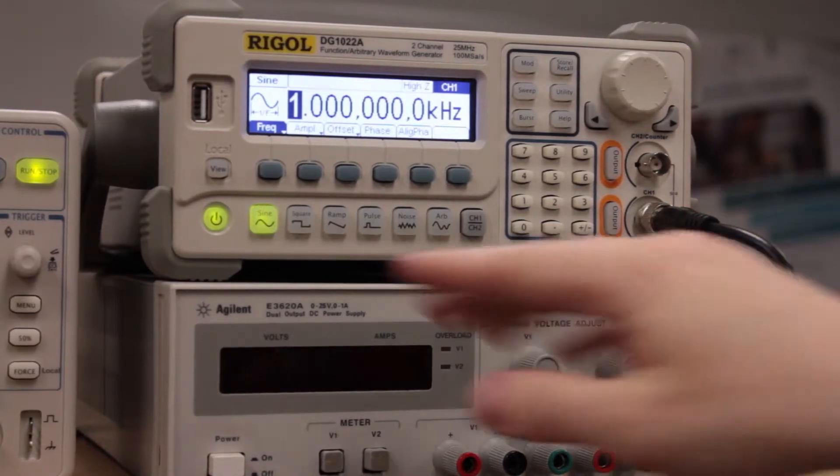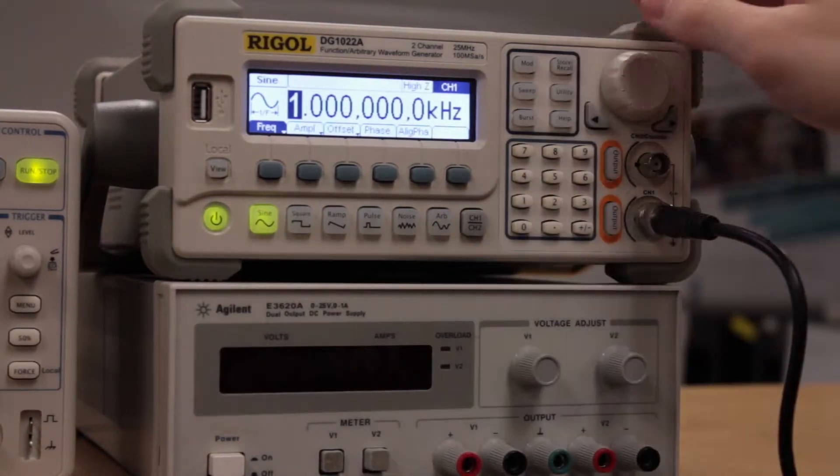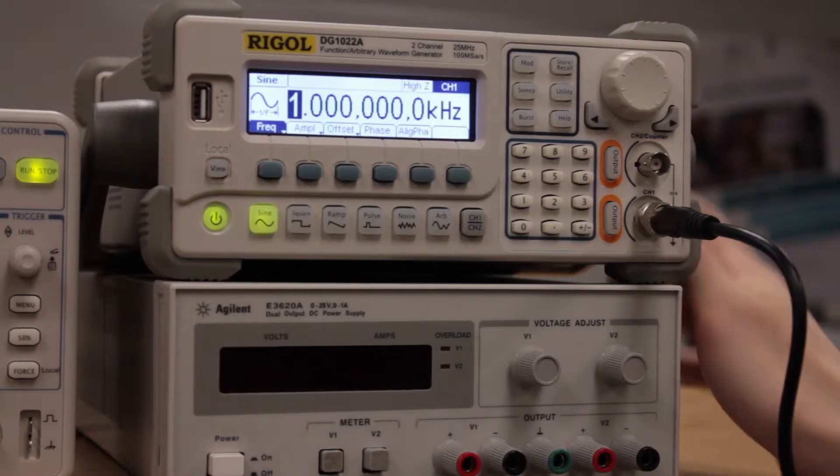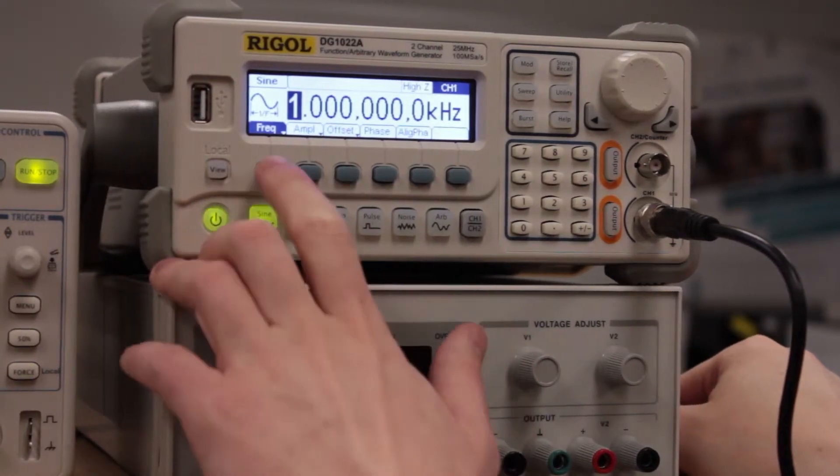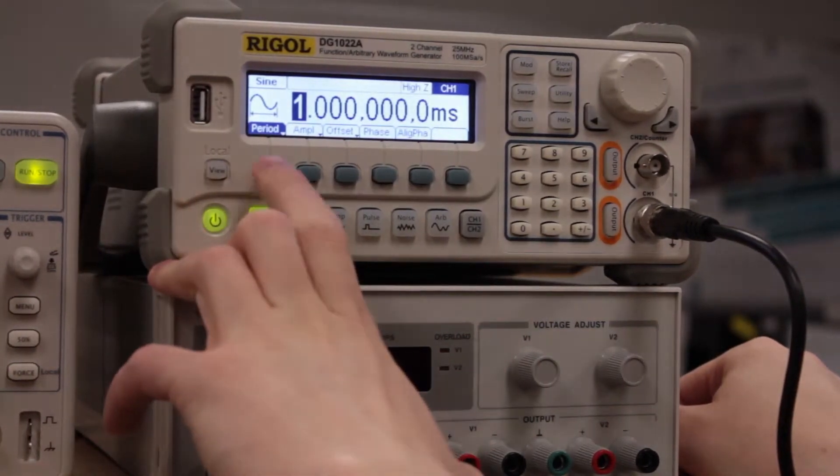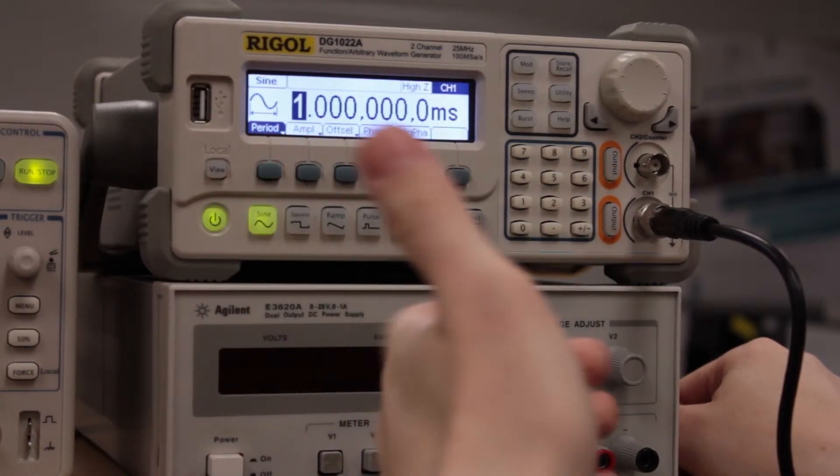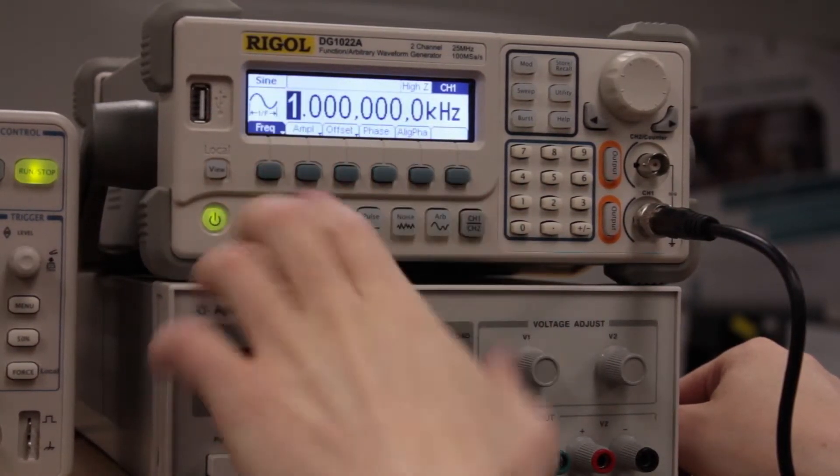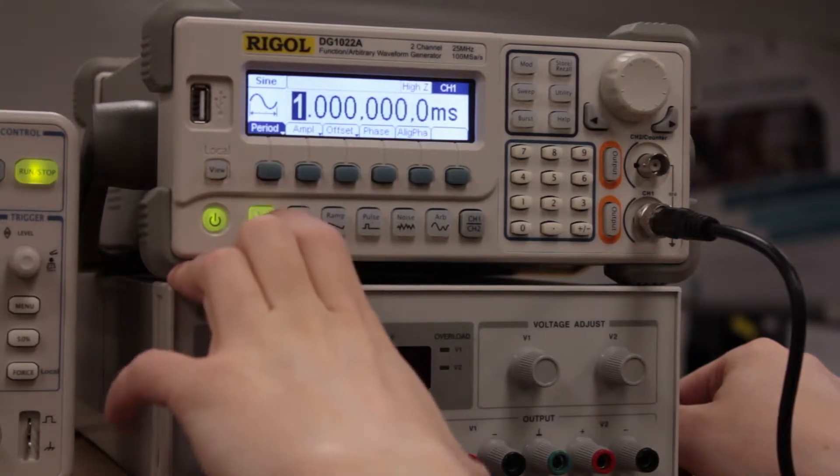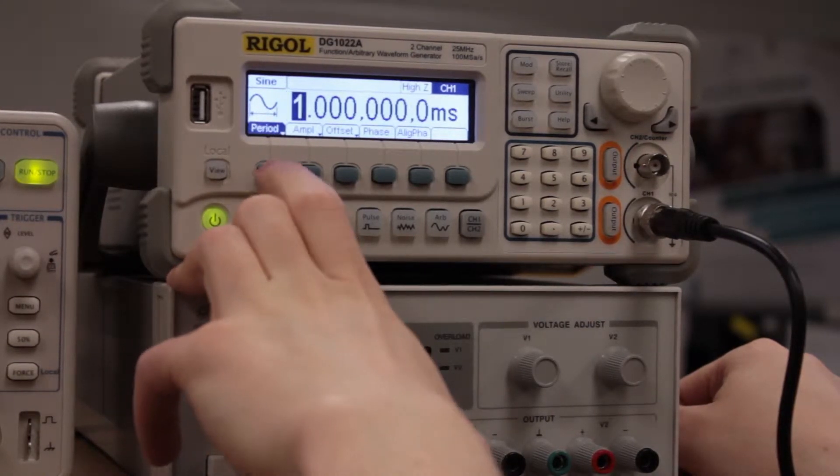One of the things that messes people up is if you hit this, you can set the period. A lot of times it'll boot up and it'll be in frequency, for example, and you'll want to set a specific period. This is how you do it - you just hit this button and it switches between the two.